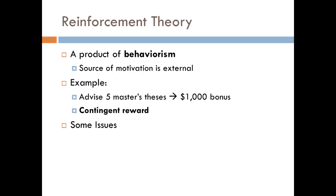First of all, most jobs are too complex to easily implement consistent reward structures. Those kinds of simple, repetitive jobs like piecework in manufacturing are quickly disappearing due to automation and more team-based approaches. Also, we now think that human judgment plays an important role. What if I decide that those five theses would amount to an awful lot of work and it's not worth the $1,000 bonus? Or what if I don't care about making more money in the first place? Wouldn't those things affect my motivation level? Any theory that doesn't allow for active reasoning on the part of the worker is now considered pretty incomplete. While we may use reinforcement as a component of a modern theory of motivation, reinforcement by itself is not the whole picture.